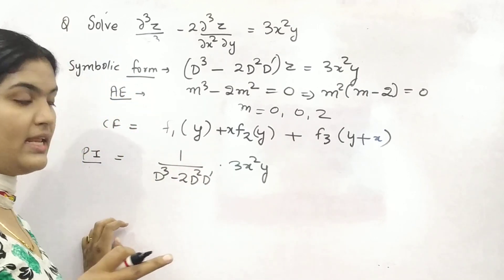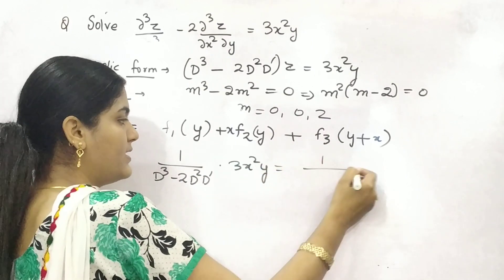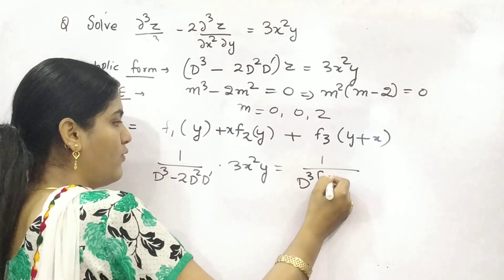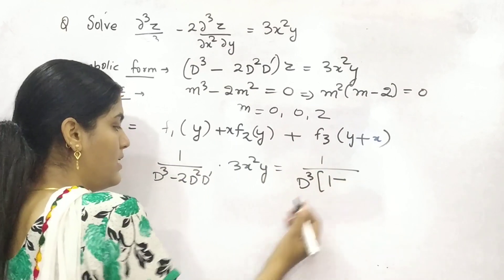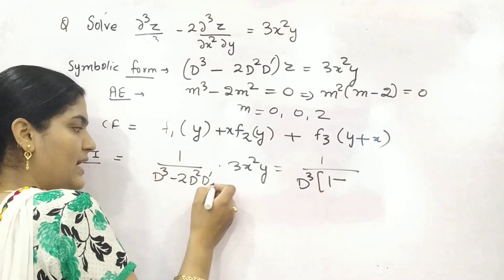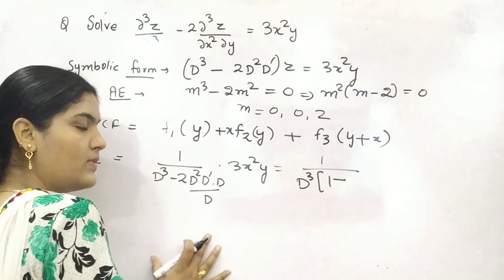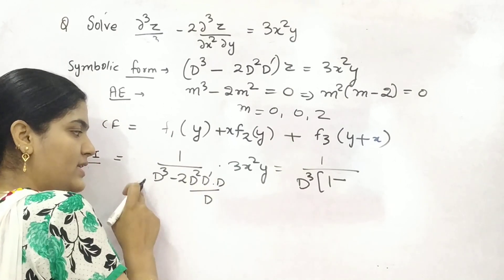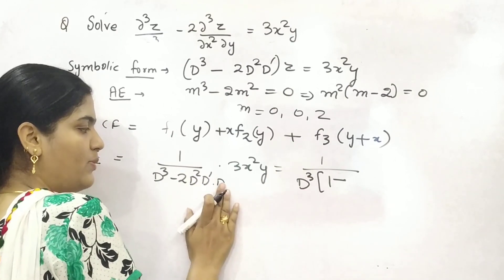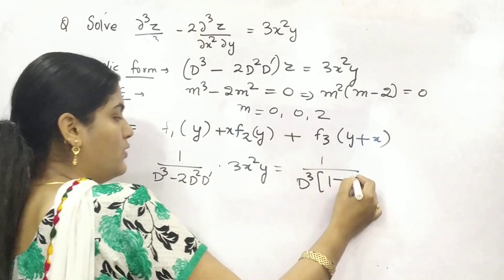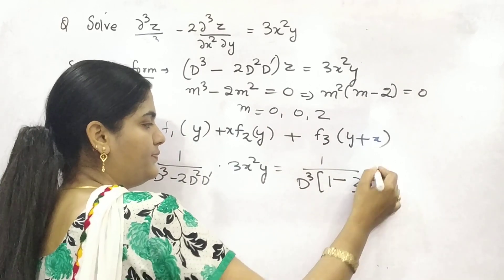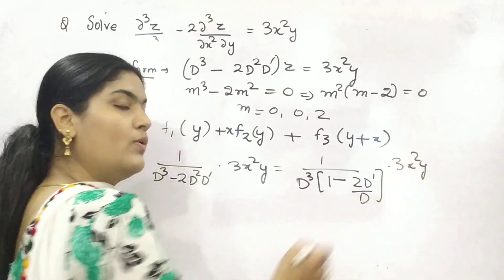First of all, take common the highest order derivative. So highest order is d³. What is left? 1 minus. See, to take d³ common, can I multiply it with d and divide it with d? Then d³ you can take common and d is left in denominator. So, 2d'/d.